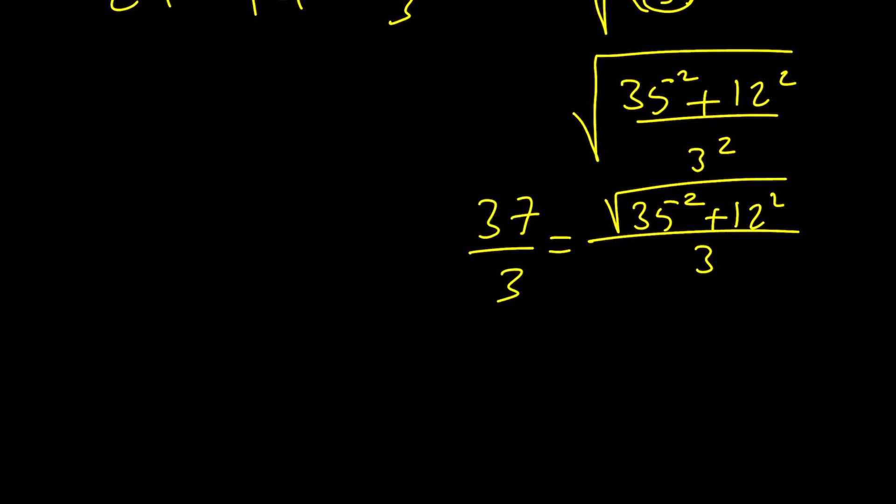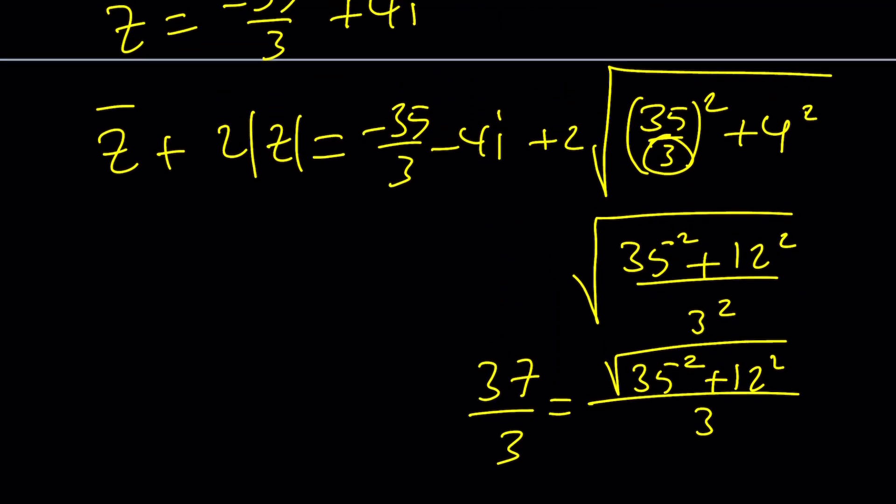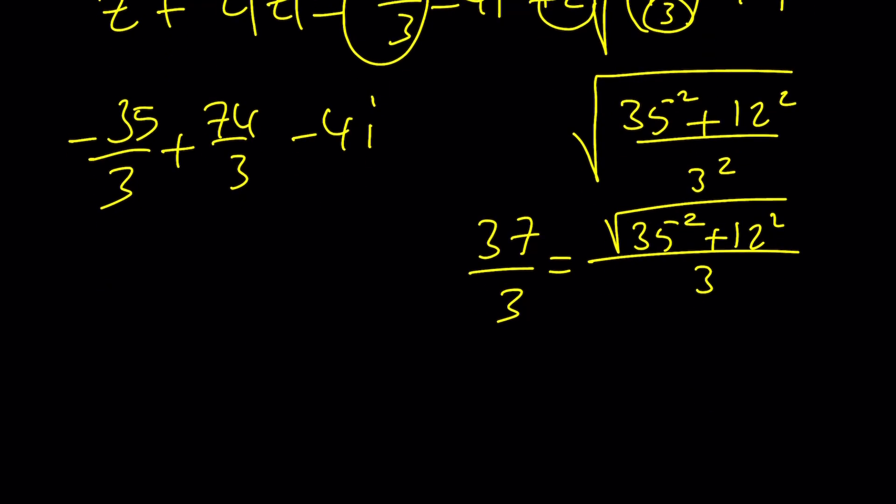You got a Pythagorean triple: 35, 12 and 37. There's a way to get them. We'll also make a video on that. But here you're going to multiply this by 2. So here's what you get: negative 35 over 3 plus 2 times 37 over 3, which is 74 over 3, minus 4i. And this becomes 39 over 3 which is 13 minus 4i. Yay, that's the right hand side. So we have success. And this brings us to the end of the video.